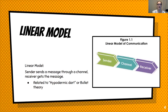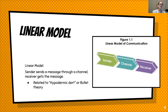The first communication model we'll talk about is the linear model. The sender sends a message through a particular channel — voice, Instagram, whatever — and the receiver just gets the message. I like to talk about the hypodermic dart or bullet theory of communication here, which was big when we were discussing persuasion and the effect of media. It just says I send a message and the other person just does it. Obviously that's not really how life works and how communication works.